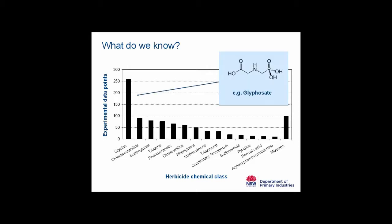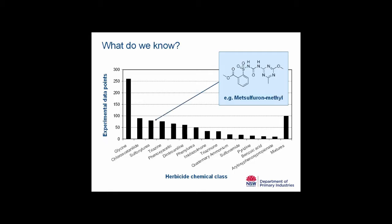Looking at the chemical structures, I'd like to point out that many of these herbicides, as well as containing carbon, also contain smaller amounts of macronutrients such as nitrogen and phosphorus. So from the point of view of soil biology, certain microorganisms can see these chemicals as a food source. Whether they interact detrimentally or beneficially to the soil biology is something we hope to tease out.